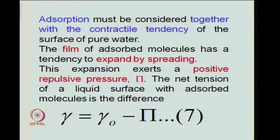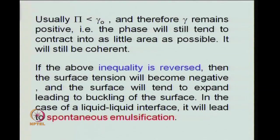In general, this repulsive pressure π is less than the contractile potential γ₀, and therefore γ, which is γ₀ minus π, remains positive. The two-component solution will still tend to contract the surface. But the related question arises: what if this inequality is reversed? In that case, the surface tension will become negative. If π exceeds γ₀, then the surface tension γ will become negative, and the surface will tend to expand instead of contracting.